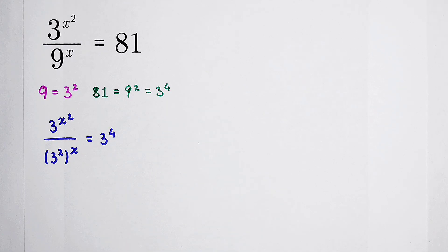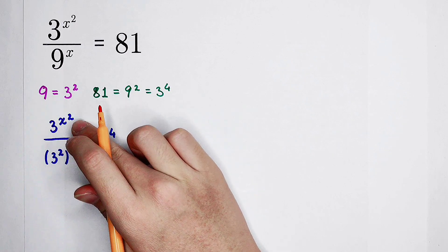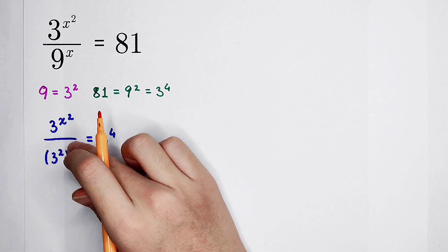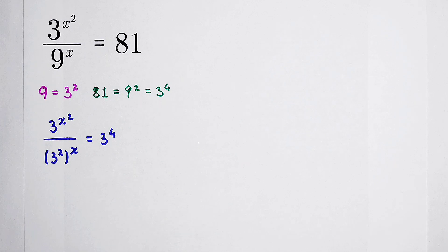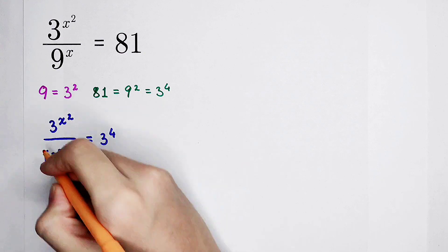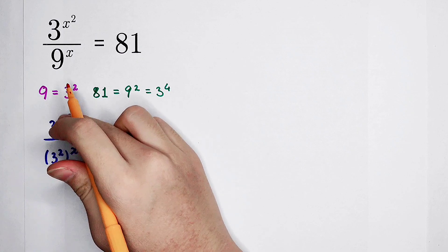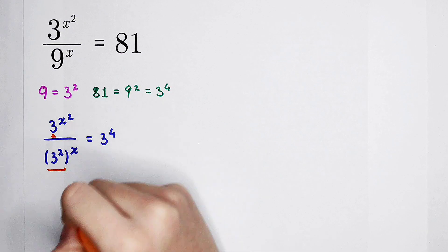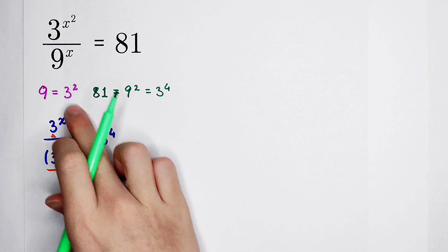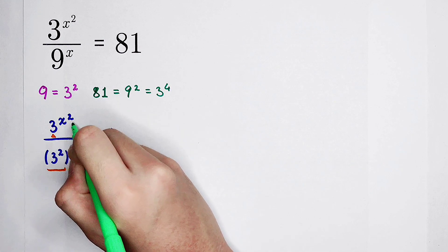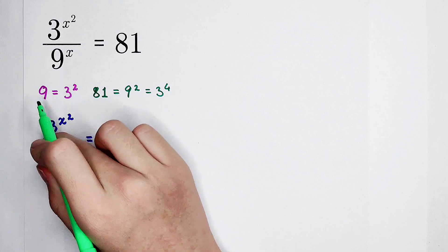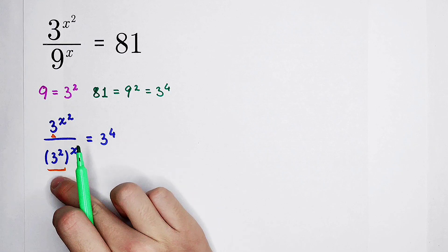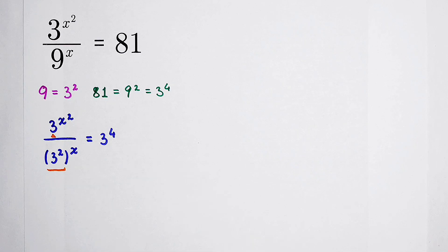Now I have a question. The numerator is 3 to the power of x squared, and the denominator is 3 to the power of 2, all to the power of x. Are there any differences? Of course there are. The base in the numerator is 3, not 3 to the power of x or 3 to the power of 2. In the numerator, we calculate x squared first, then it becomes the exponent of 3. But for the denominator, we calculate x first, and the base is 3 to the power of 2.